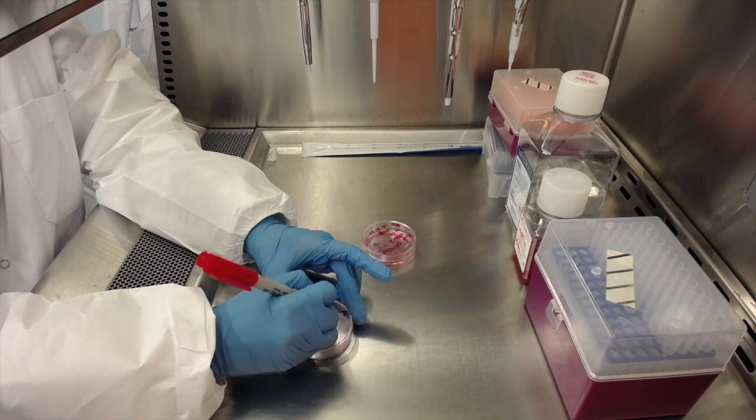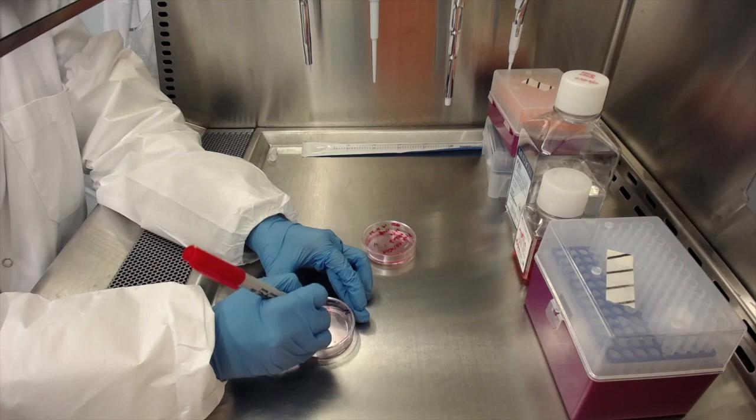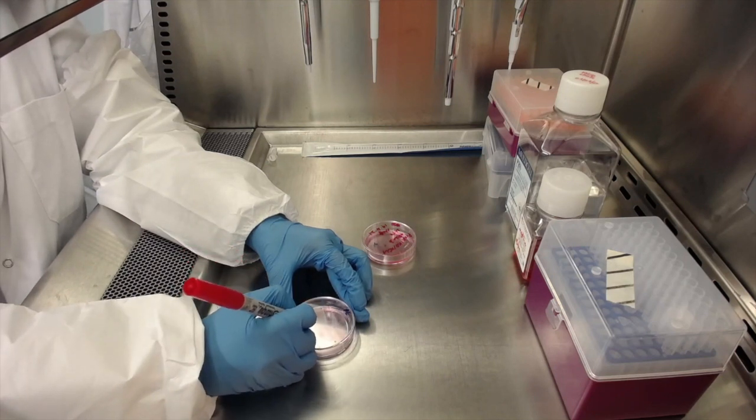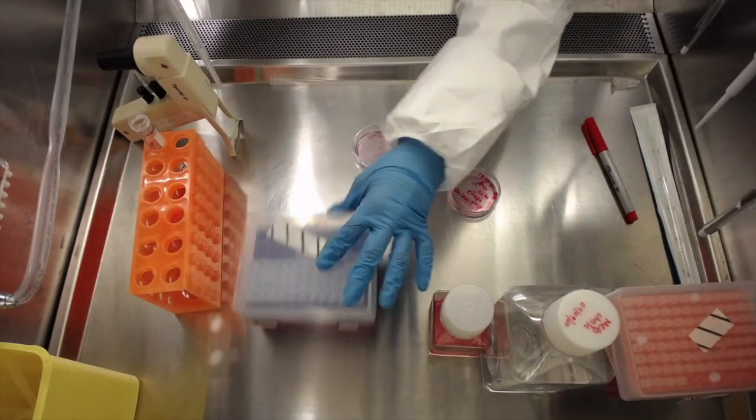Since there were not a lot of floating cell aggregates in the dish, we will directly transfer the aggregates to a new Matrigel coated dish. As you can see here, we label the dish. We remove the coating solution from the dish.